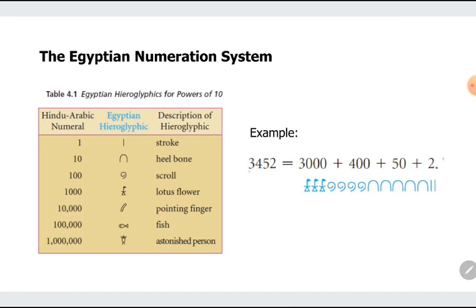So 3,452, how do we write that in Egyptian hieroglyphics? You can write it first in expanded form. So 3,000 plus 400 plus 50 plus 2. So 1,000 times 3, right? So the symbol for 1,000 is the lotus flower. That's why you have 3 lotus flowers here. We already know the scroll, that's for 100, so 4 of that. And then 5 of the heel bones, so you have 5 of this. And then 2 strokes for 2.